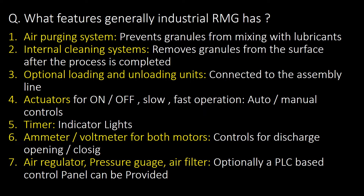What features does an industrial RMG generally have? Industrial RMG generally has the following seven features: air purging system, internal cleaning systems, optional loading and unloading units, actuators, timer, ammeter or voltmeter for both the motors, air regulator, pressure gauge, and air filter.